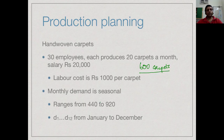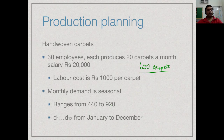Sometimes the demand is as low as 440. With 30 employees each producing 20 carpets a month, we always produce 600 carpets, leaving 160 which we cannot sell that month. But there are months where demand is 920, and the question becomes whether we have enough carpets to sell or not.